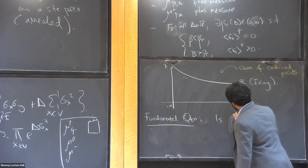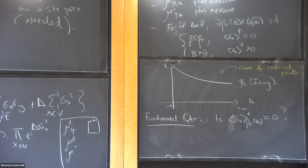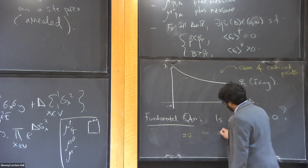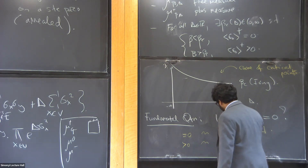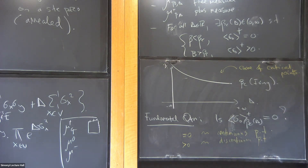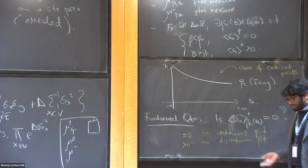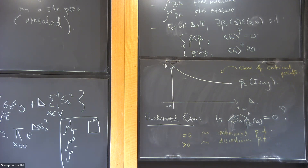This is the curve of critical points, and the central question — at least the step zero of looking at critical phenomena — is to understand what's happening at beta_c. Is the magnetization at beta_c equal to zero or strictly positive? If it equals zero, this is called a point of continuous phase transition. If it's strictly positive, this is called a discontinuous phase transition. In physics these are sometimes called second-order and first-order. Points of continuous phase transition are probabilistically much more interesting: they are associated with non-trivial correlations and, in two dimensions, fractal geometry.